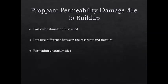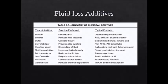Proppant permeability damage also has a major effect on conductivity. Factors that greatly influence the thickness of the fluid cake and therefore the permeability include the particular stimulant fluid, pressure difference between the fracture and the reservoir, and formation characteristics. Like damage to gel residue, damage to fluid loss additives can prove just as detrimental to conductivity. Here we see a chart of the most common additives, what their functions are, and what their typical products are.